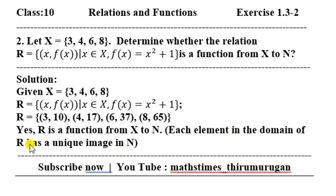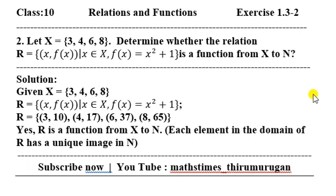So now let's say R is a function from X to Y. Let's take a diagram. If you look at X and Y — mapping 4 to 17, mapping 6 to 37, mapping 8 to 65. Each element in the domain of R has a unique image, so R is a function. That's clear. Understanding — thank you.